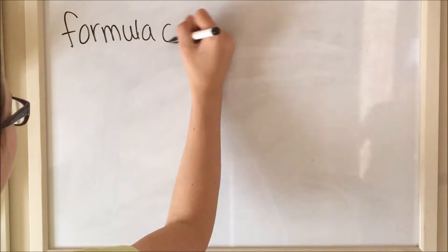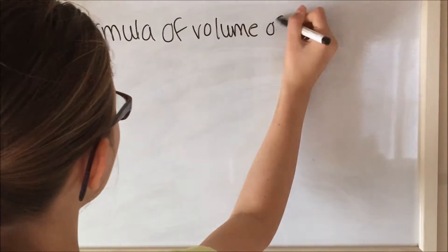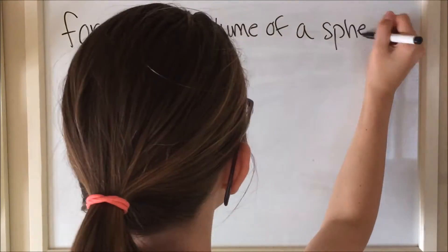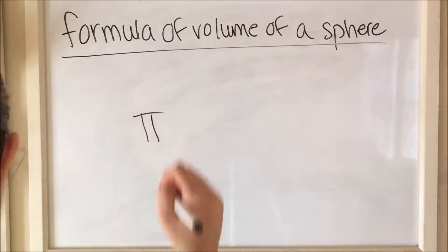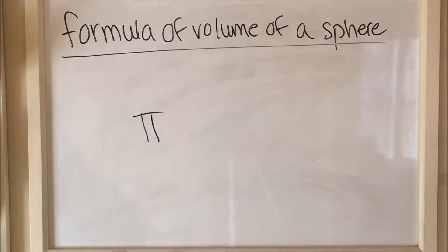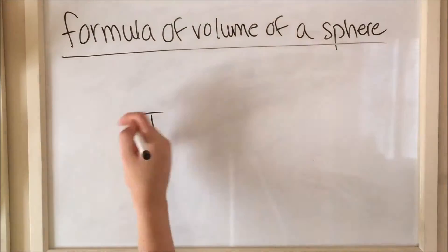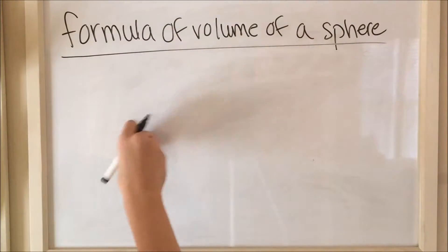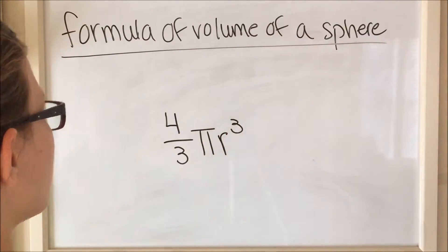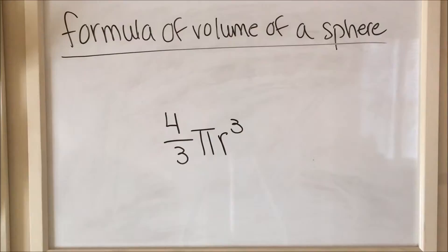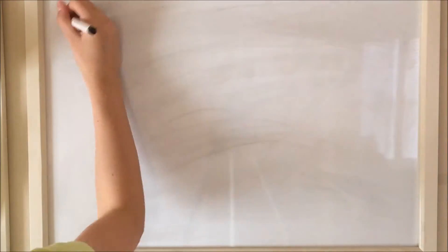Moving on to the formula for the volume of a sphere. This one is a little different from the cone and the cylinder, but it is 4/3 times π times r cubed. Make sure it's cubed or you will get everything wrong.